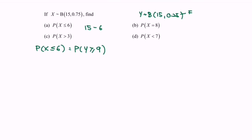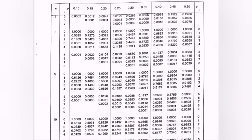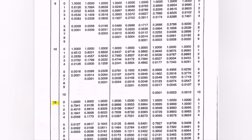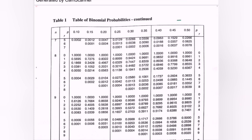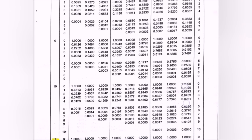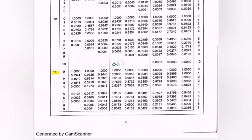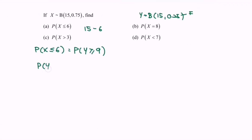By referring to the binomial distribution table with n equal to 15 and p equal to 0.25, we look up where Y is greater than or equal to 9. From the table, the probability is 0.0042. So the probability that Y is greater than or equal to 9 equals 0.0042, and that is the answer for part A.